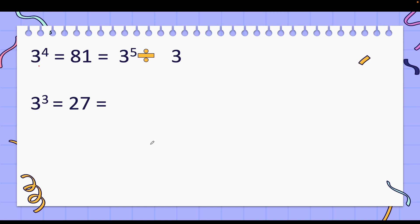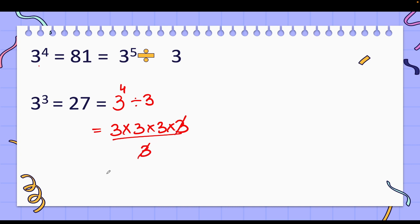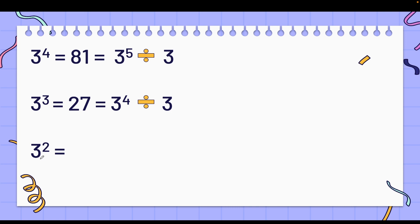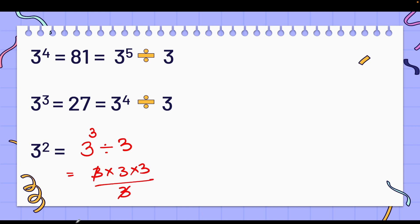Using the same logic, 3 to the power 4 can be written as 3⁴ ÷ 3, which gives 3 to the power 3. Then 3 to the power 3 can be written as 3⁴ ÷ 3 — and following the same pattern, 3 to the power 2 can be written as 3³ ÷ 3. That is 3 × 3 × 3 divided by 3; one 3 cancels, leaving 3² which equals 9.